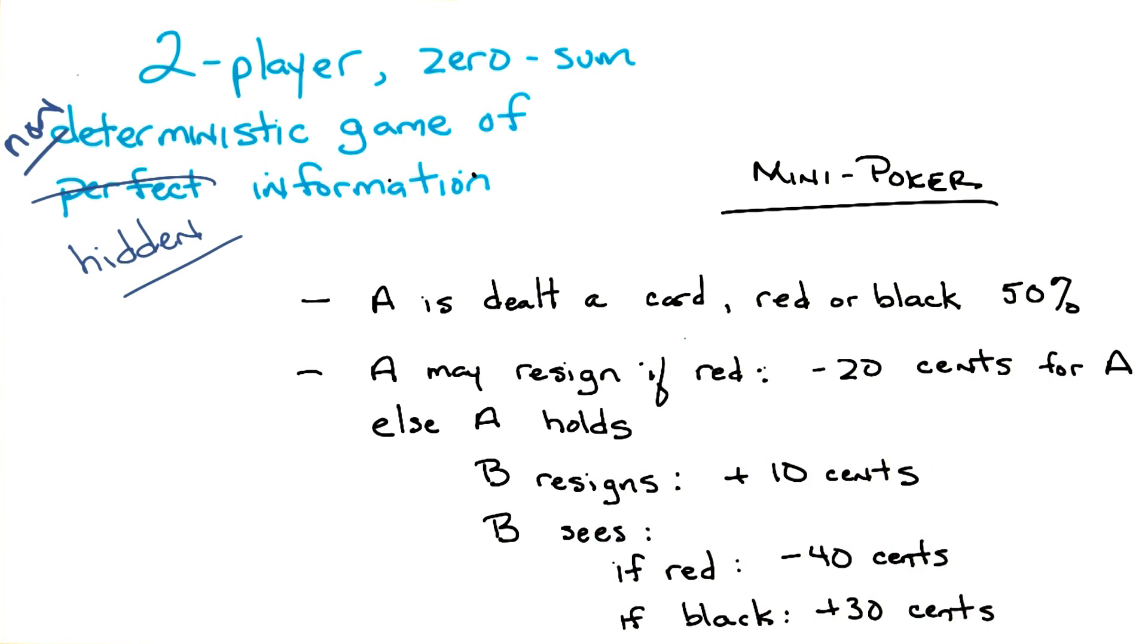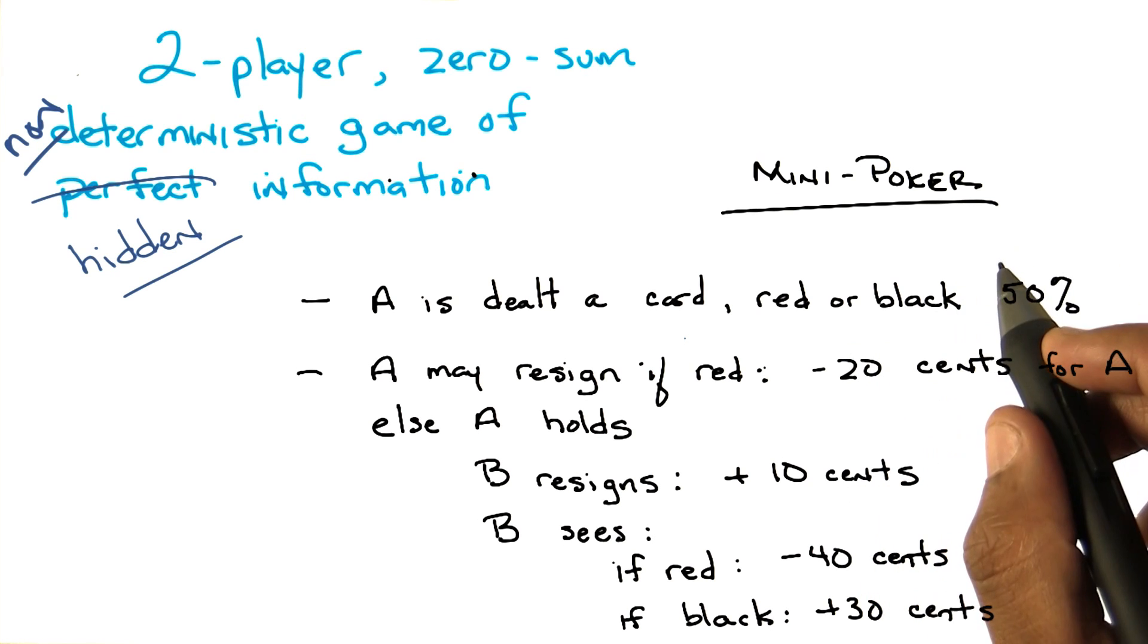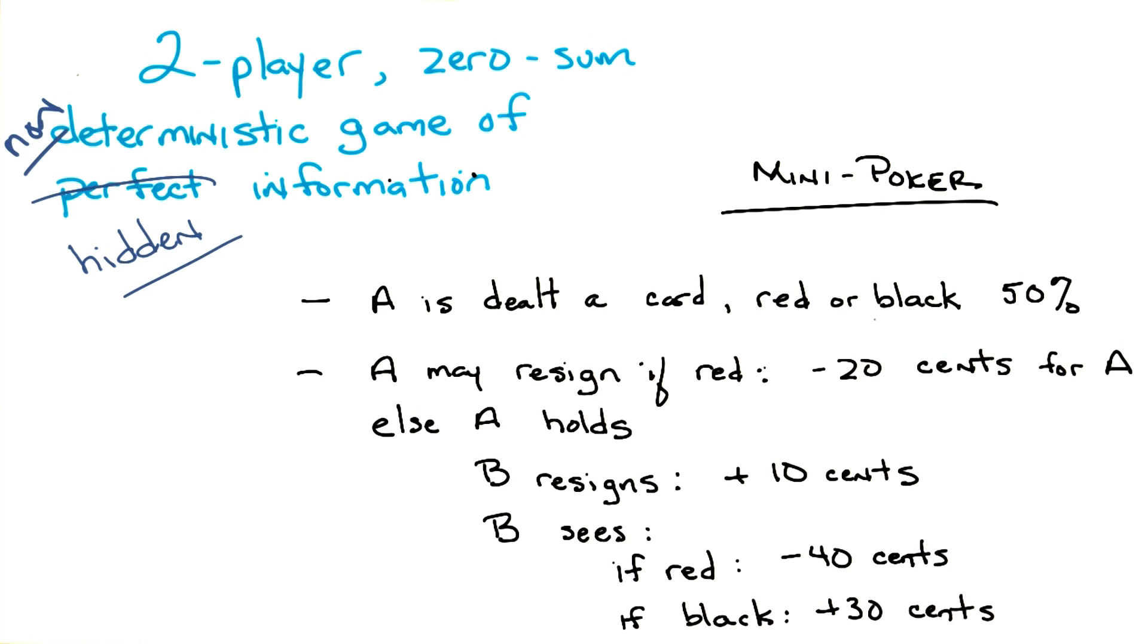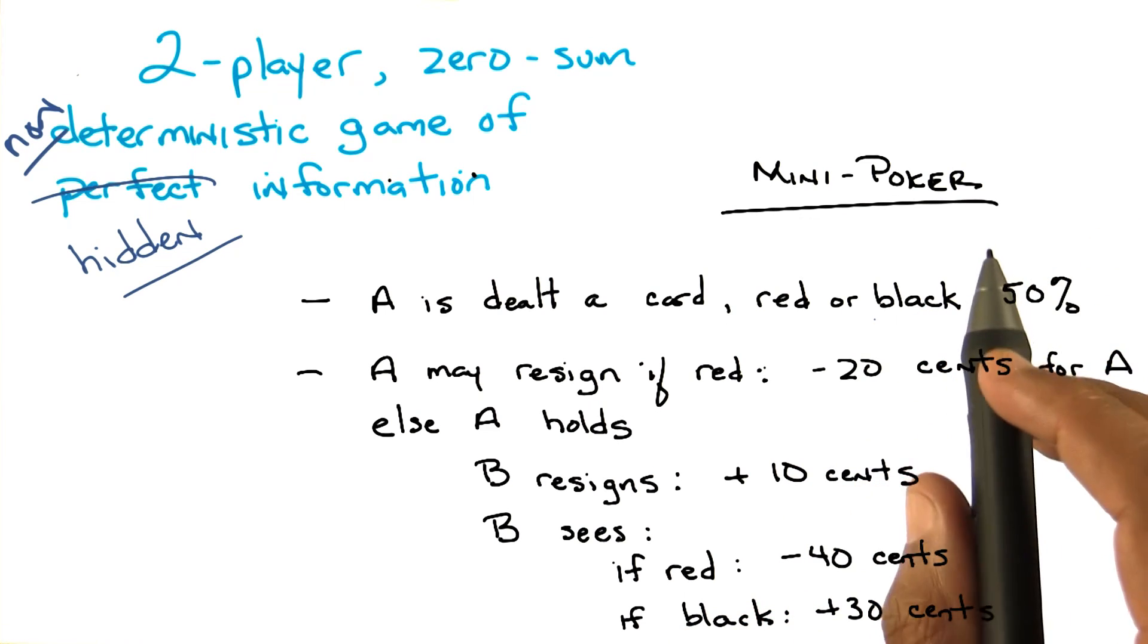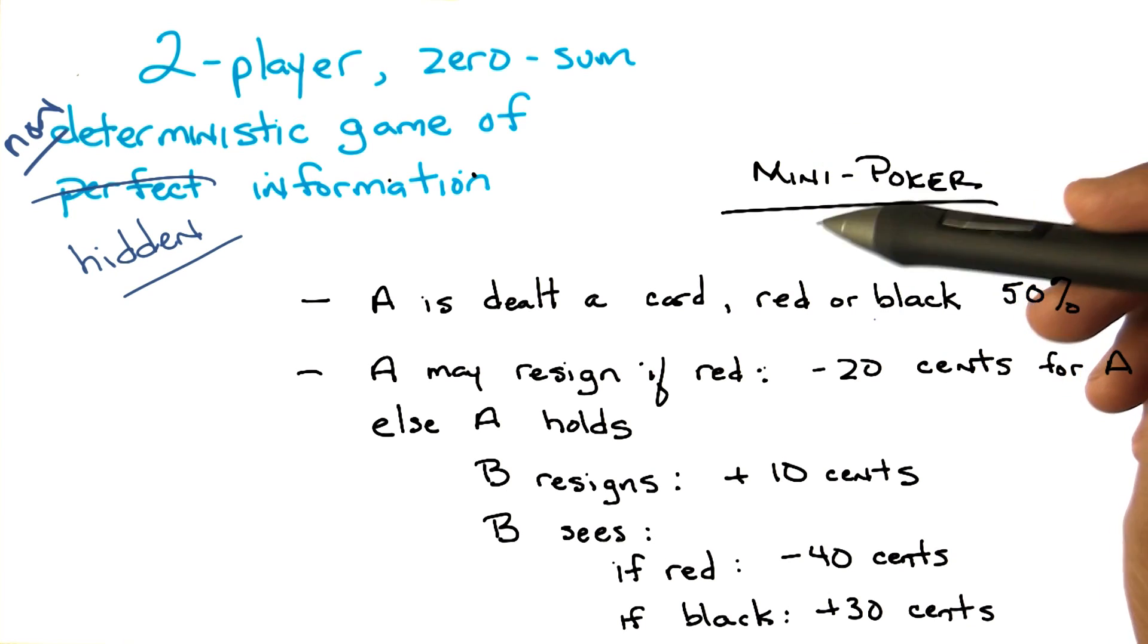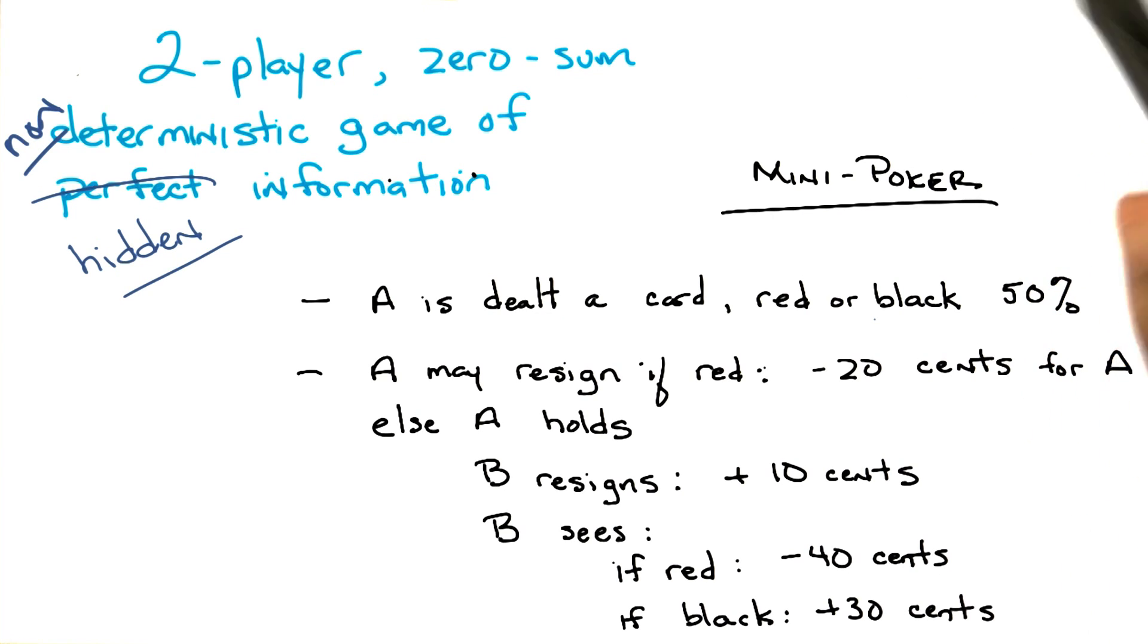So, A is dealt a card, magically. It will be red or black, and the probability of it being red or black is 50% each, okay? Right, so we have a uniform prior over the color. Now, remember, red is bad for A, and black is good for A. So, it's going to turn out, without loss of generality, that if A gets a black card, A is definitely going to hold on to the card, okay?